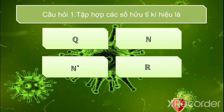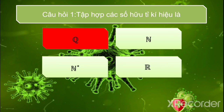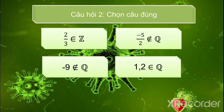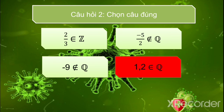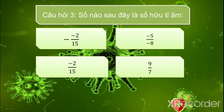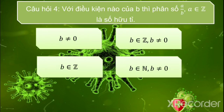Câu hỏi 1: Tập hợp các số hữu tỉ ký hiệu là gì? Đáp án chính xác là Q. Câu 2: Chọn câu đúng — 1,2 thuộc Q là đáp án đúng. Câu 3: Số nào là số hữu tỉ âm? Đáp án là âm 12,5 phần 5. Câu 4: Với điều kiện nào của B thì phân số A phần B (A thuộc Z) là số hữu tỉ? Đáp án đầy đủ nhất là: B cũng thuộc tập hợp các số nguyên và B khác không.